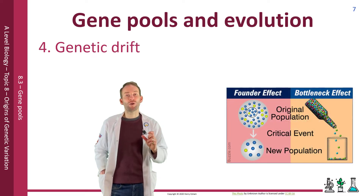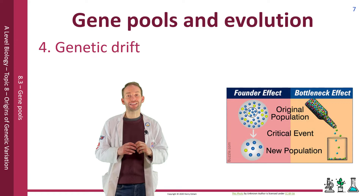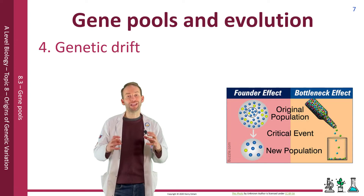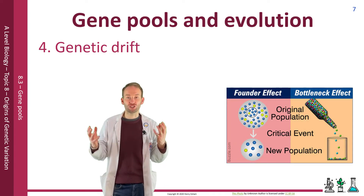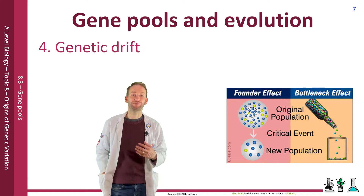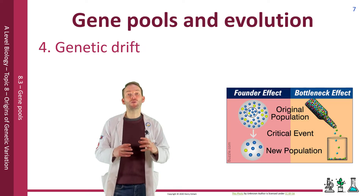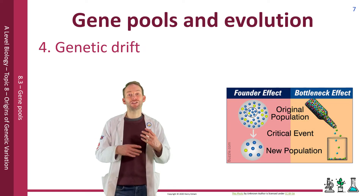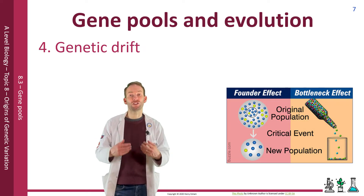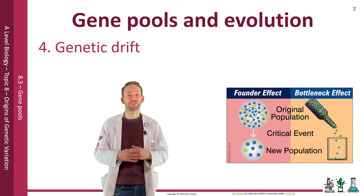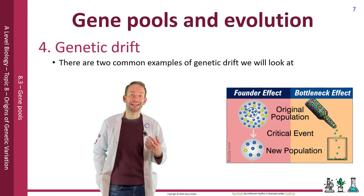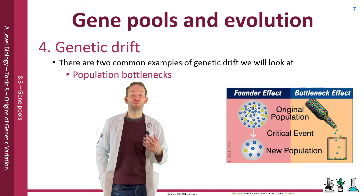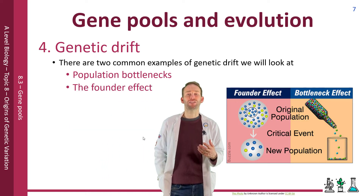The fourth factor is genetic drift. In small populations you can get a much smaller gene pool, and allele frequencies can therefore change really dramatically. In these smaller populations, allele frequencies can change due to chance, which we call genetic drift. There are two common examples of genetic drift: population bottlenecks and the founder effect.